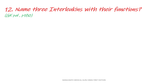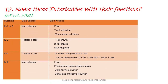The answer to this question is taken from GK Paul, page number 180. The main source of interleukin-1 are macrophages. The main actions of interleukin-1 are fever, T-cell activation, and macrophage activation.